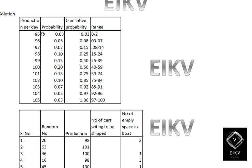For the solution, I have made a table computing the ranges. The production per day and probability are taken directly from the question. Then we compute the cumulative probability by accumulating at each level: 0.03 for the first, then 3+5 gives 0.08 for the second, 0.08+7 gives 0.15, and continuing: 0.25, 0.40, 0.60, 0.75, and so on.